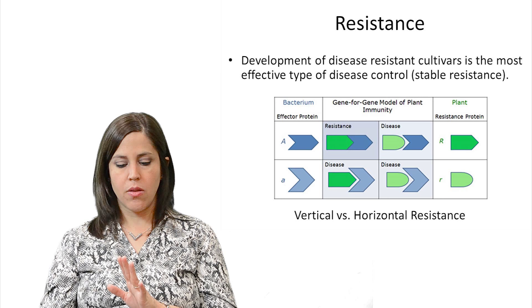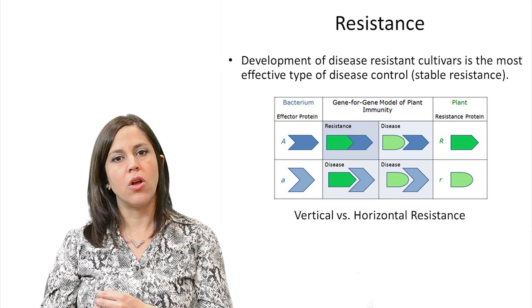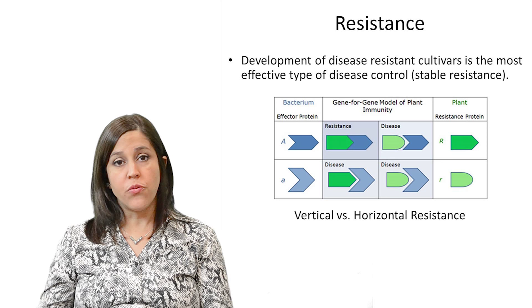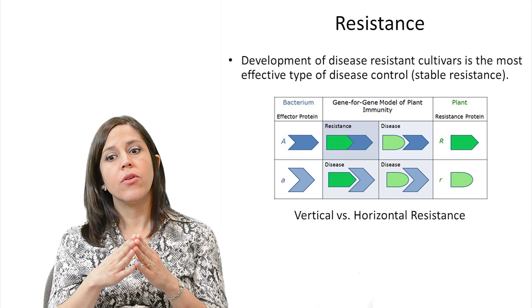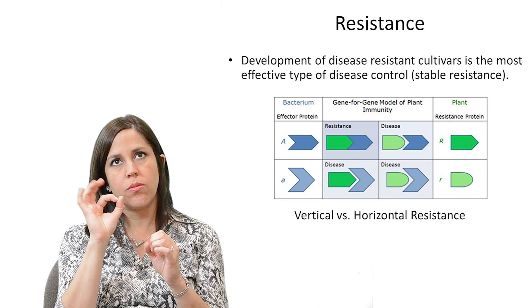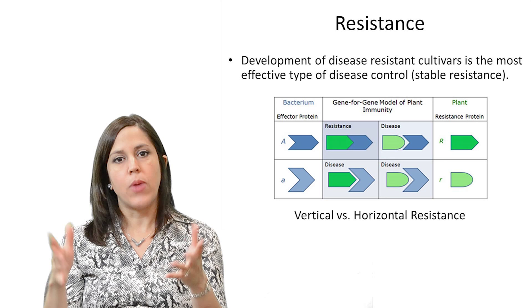Resistance is another principle for disease management — the development of disease-resistant cultivars. This is the most effective type of disease control that can be used. The ideal would be a stable resistance, more like a horizontal type of resistance, where you have a broad range of resistance rather than resistance to just one single strain of a pathogen.